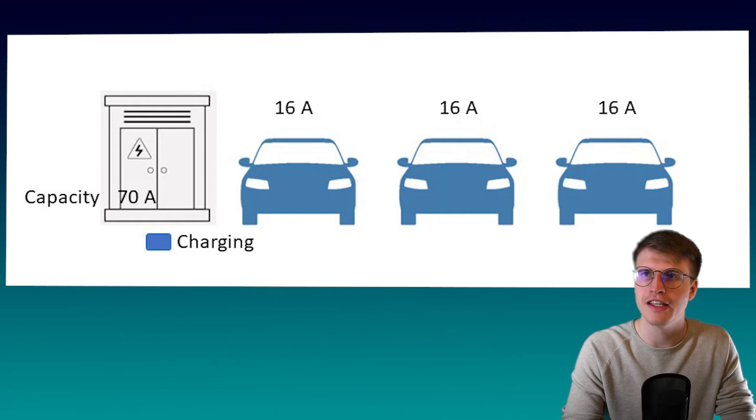This is what we see here in the graphic that is shown next to me. We have a station here that can work with 70 amps. That means that all the connected charging points can draw on 70 amps and share the 70 amps. Furthermore, we see in the diagram that three cars are connected that can be charged with a maximum of 16 amps each. Since we have enough current for all the three cars, we can also supply each car with a maximum 16 amps and the cars charge with 16 amps.